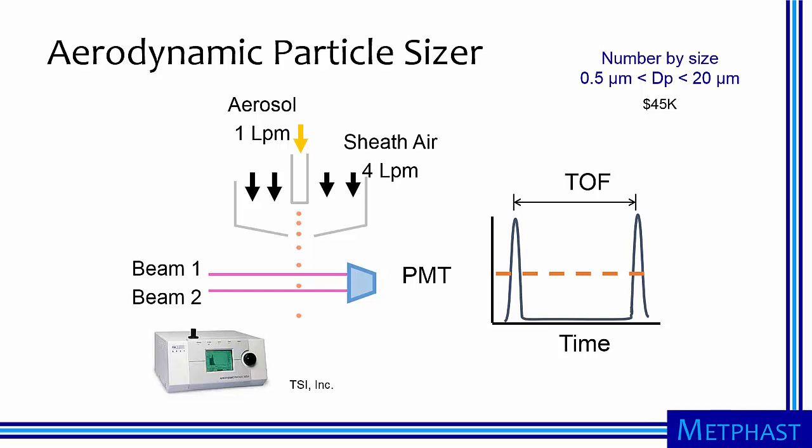An aerodynamic particle sizer uses the principle of inertia to size particles. An aerosol is rapidly accelerated through two laser beams. A photomultiplier tube is used to measure the light scattered by the particle as it passes through the beams, creating two light pulses.